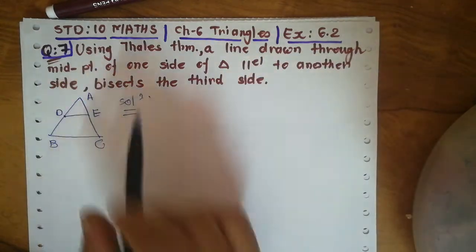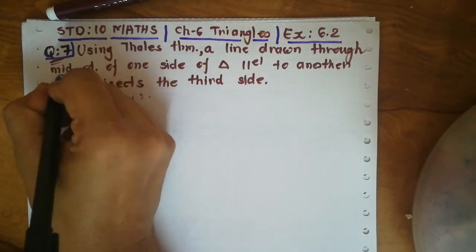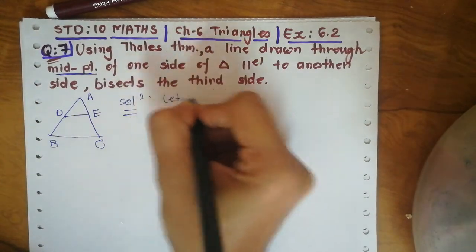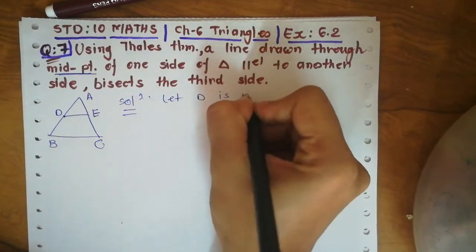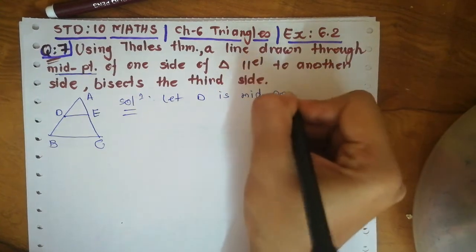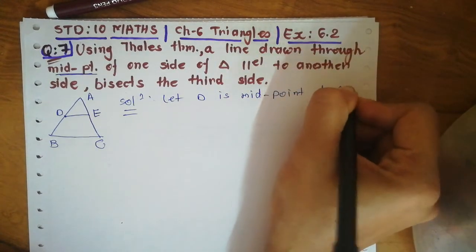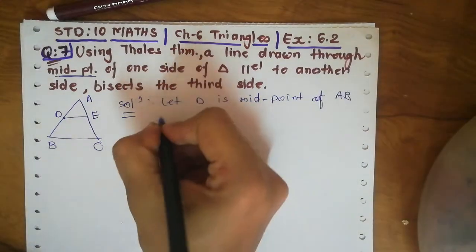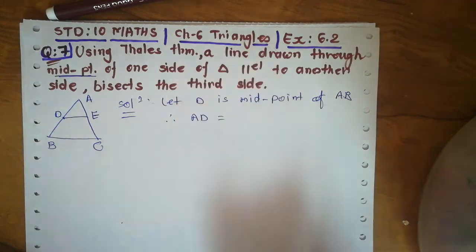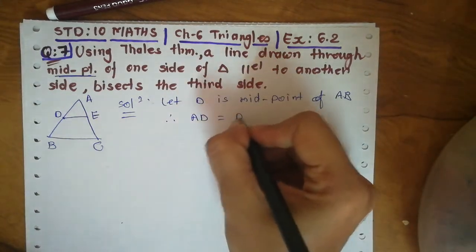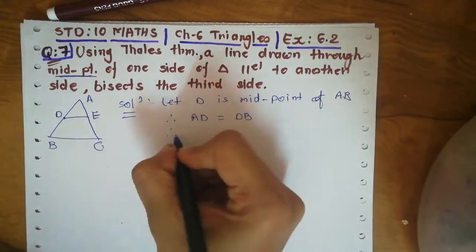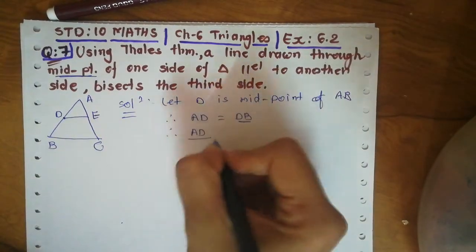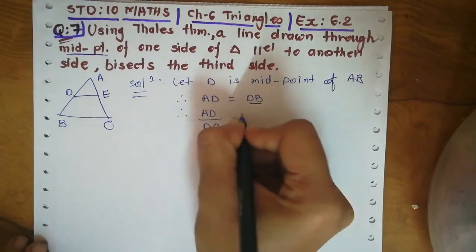The first hint is the midpoint. So focus on this word — midpoint. Let D be the midpoint of side AB of triangle ABC. D is the midpoint, therefore AD equals DB. Now if we take DB in the denominator of AD, we get AD upon DB equals 1.